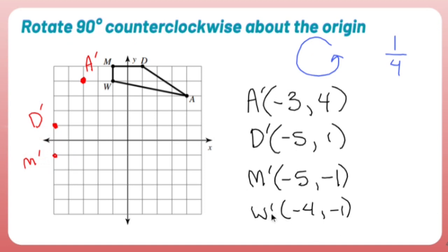And W prime, I'm sorry, W prime is negative 4, negative 1. 1, 2, 3, 4, 1. W prime.